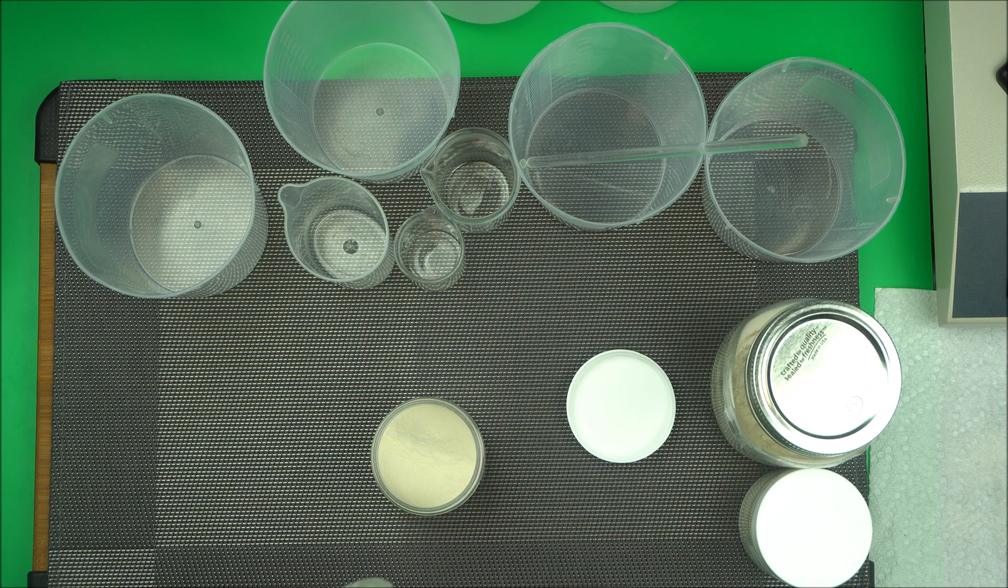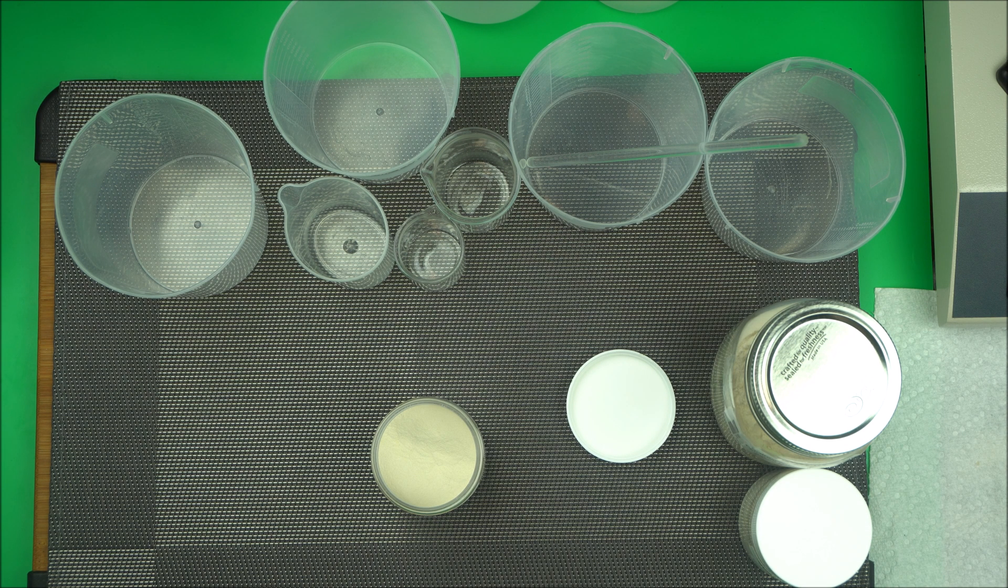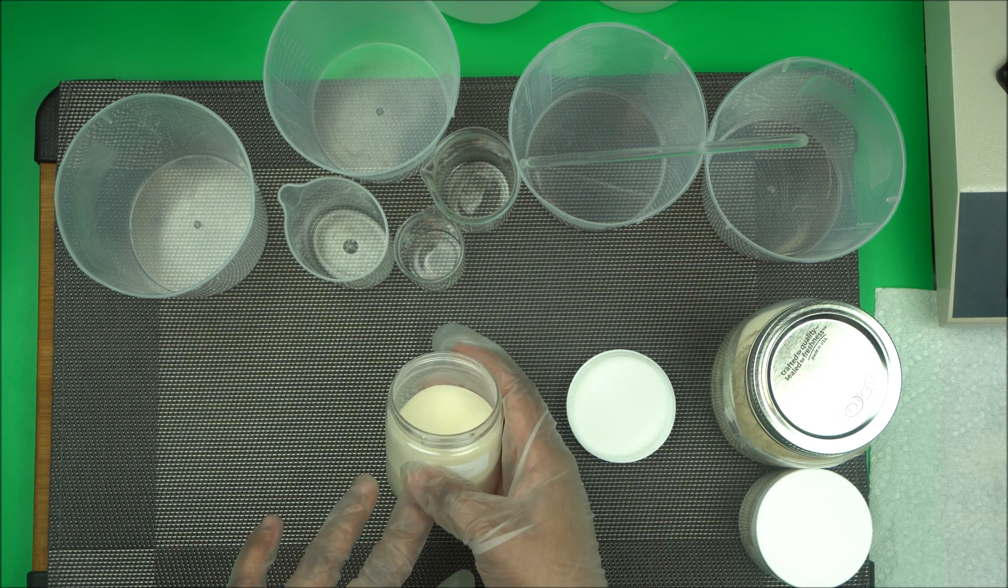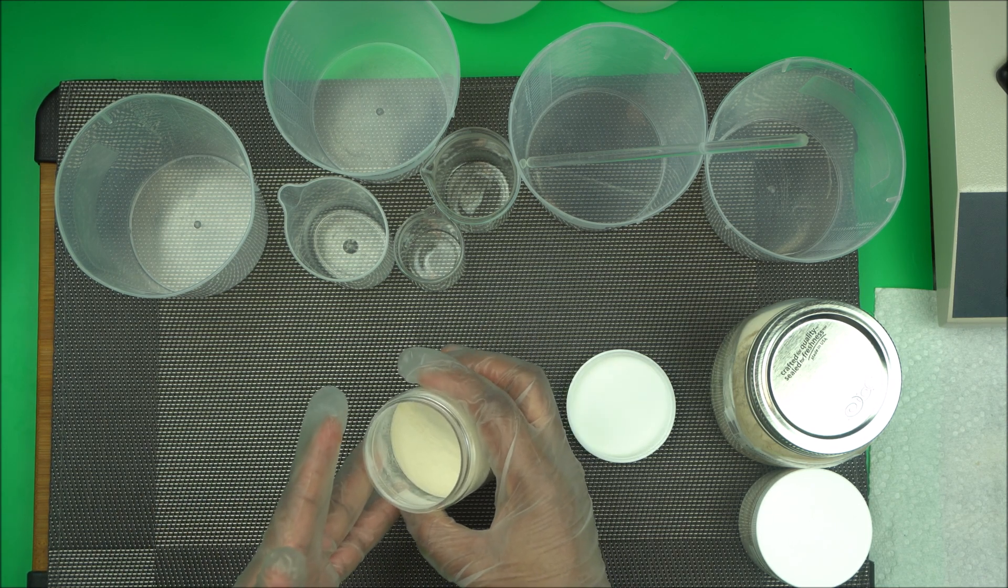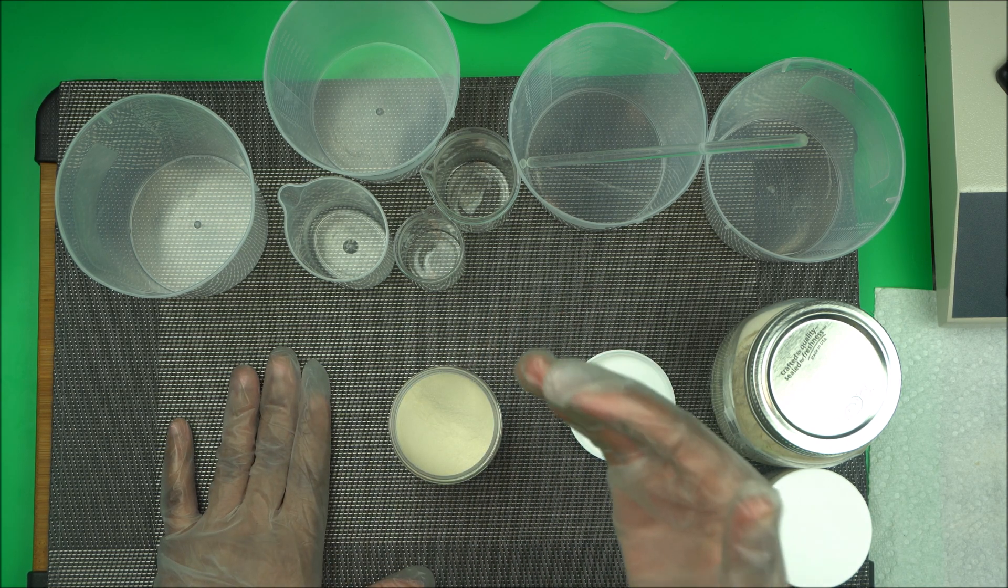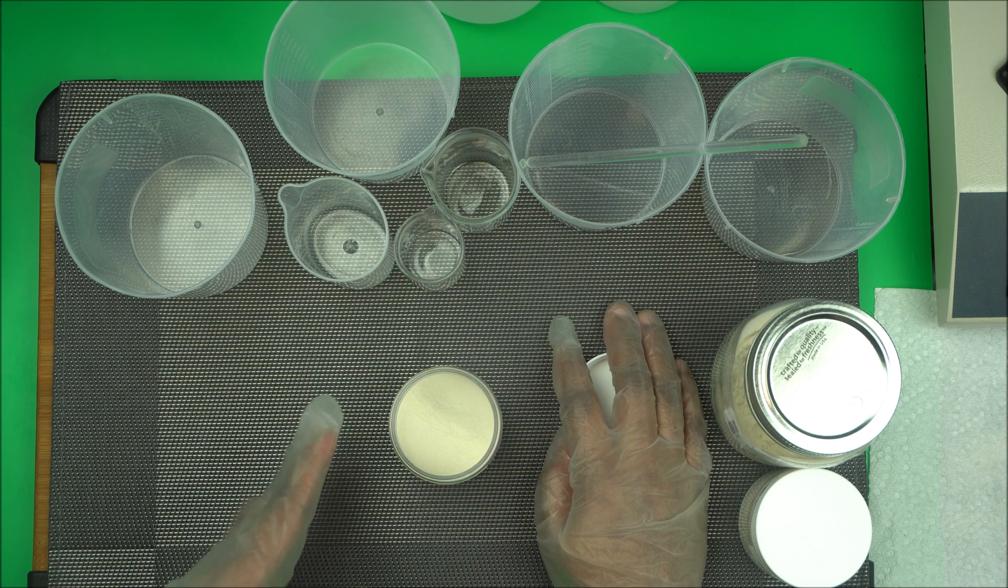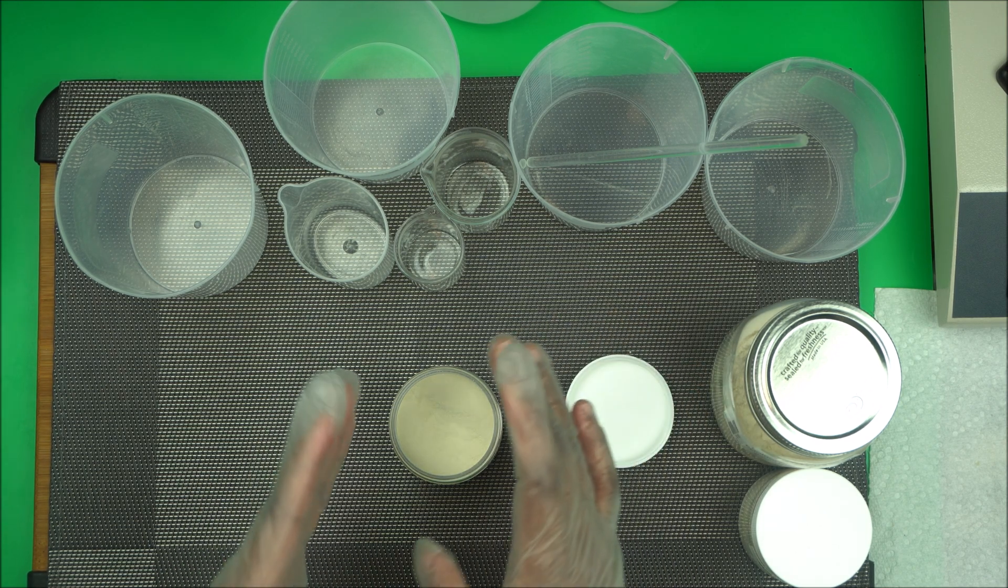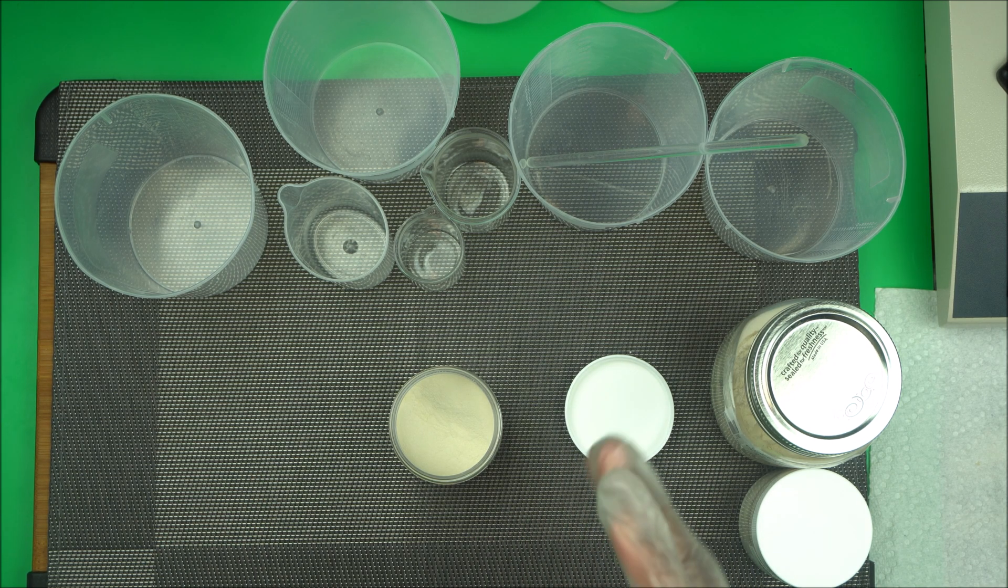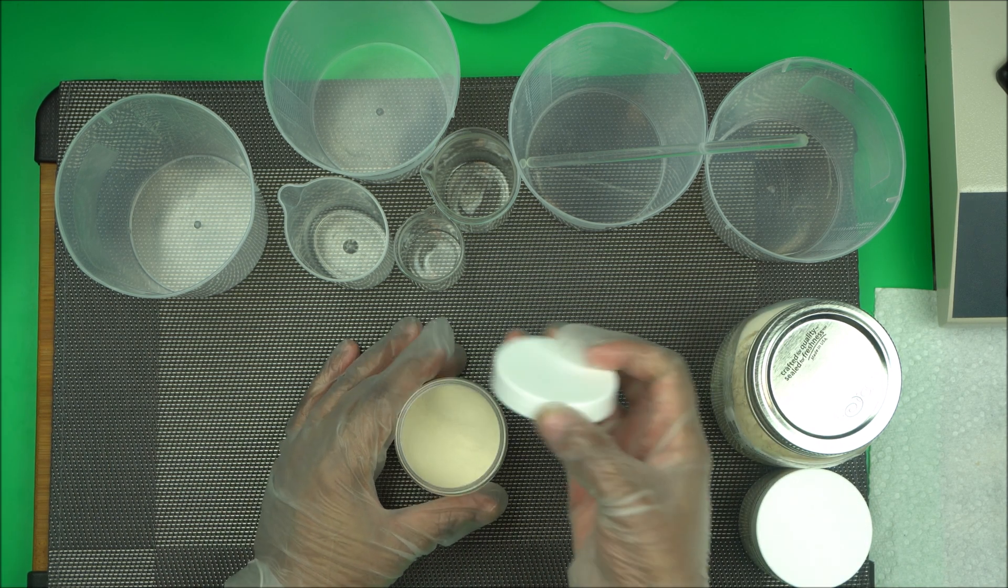Another thing that we love about xanthan gum is that you can dissolve it in glycerin, you can also dissolve it in water, and it's very easy to make skincare products. Just add it to the water phase of your formulation and that's it. You are done. Just make sure you allow it to hydrate fully.